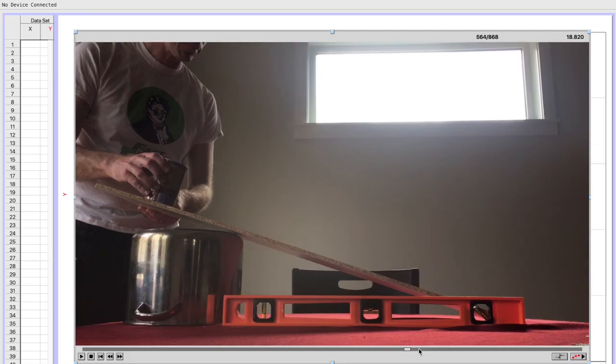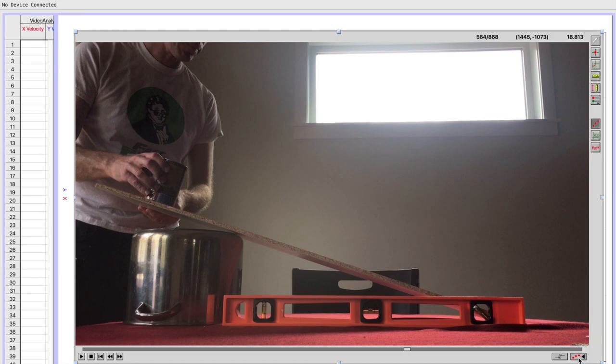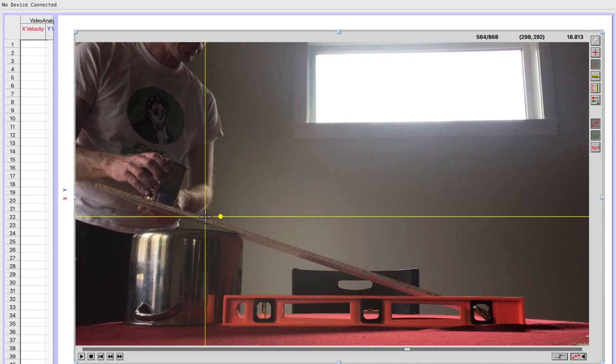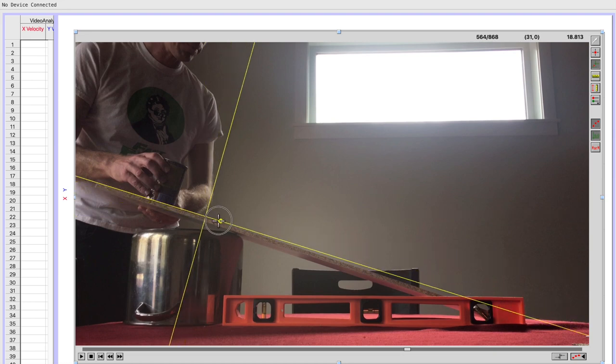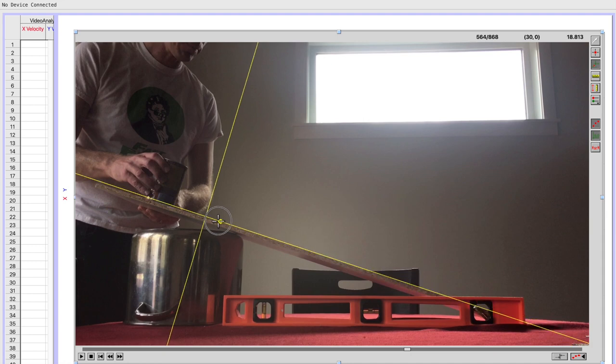When we set up our video analysis, it really helps to have the coordinate system oriented along the ramp. That way the velocity and acceleration only show up in one of the coordinates. To do this, go ahead and select the coordinate axes button here in the Logger Pro setup. Then you can click on the location of the ramp and rotate your axis so that it's running down the ramp.